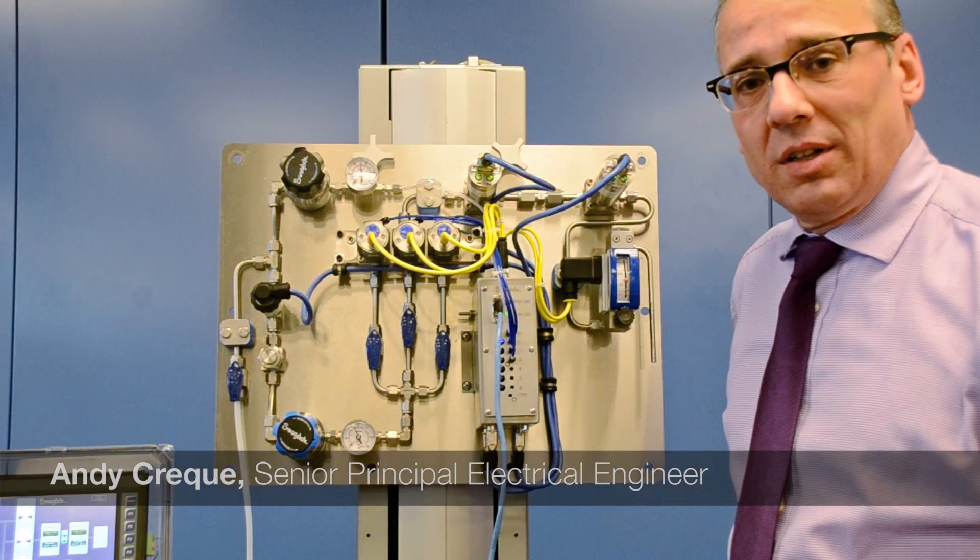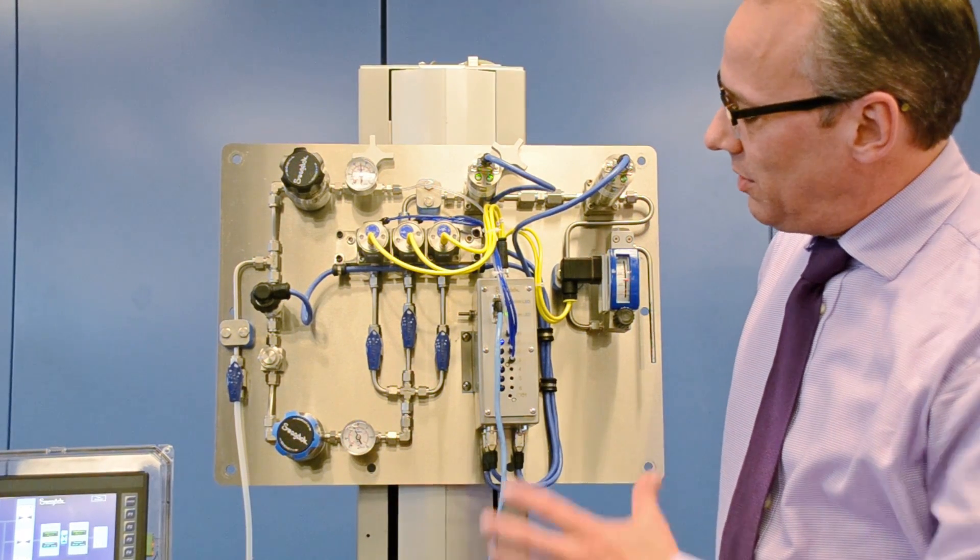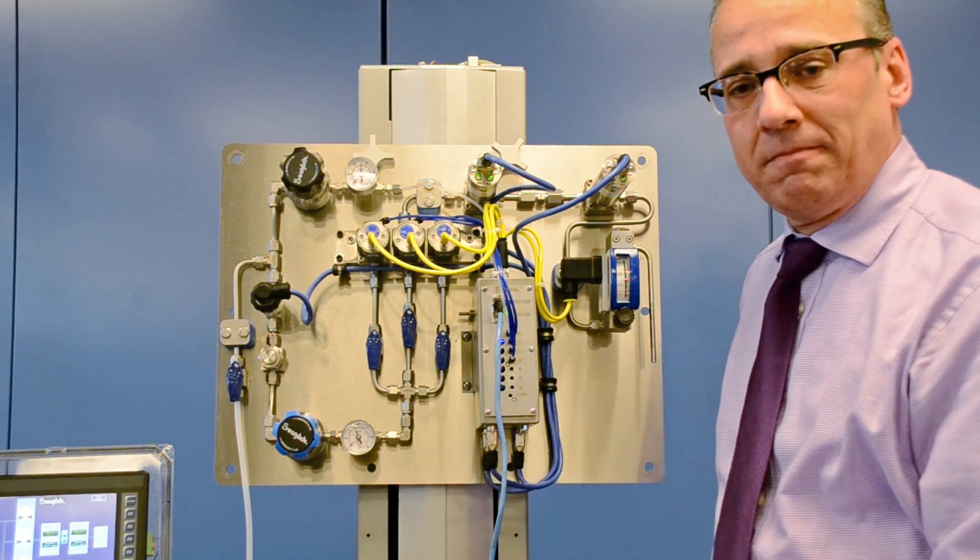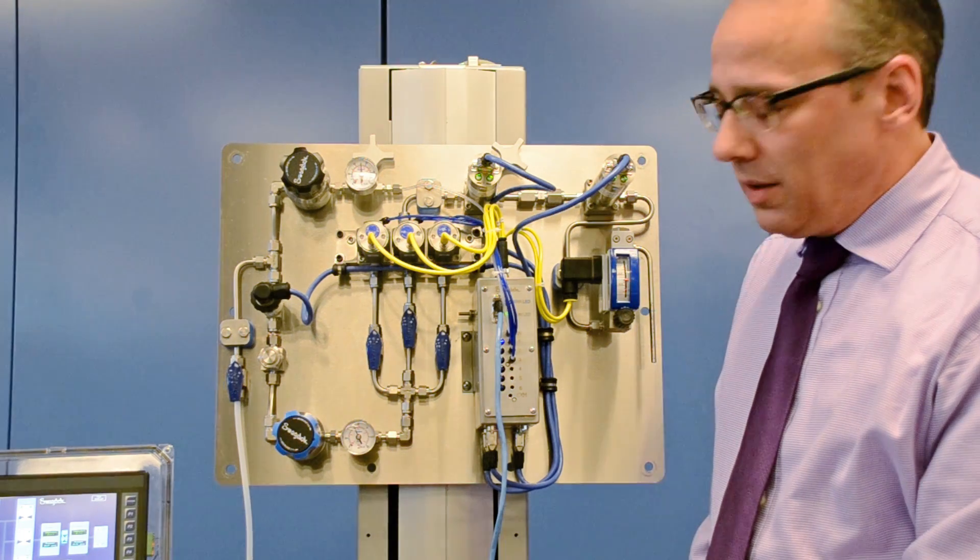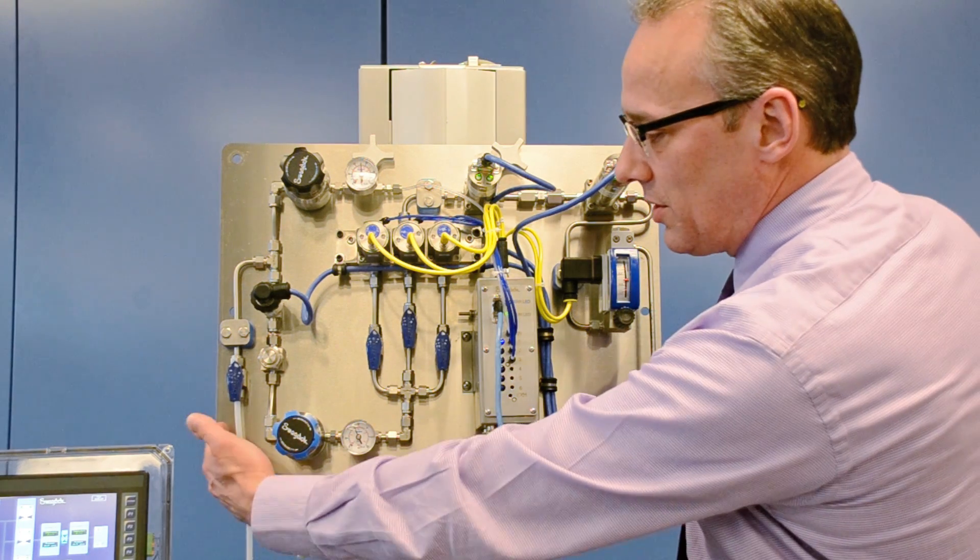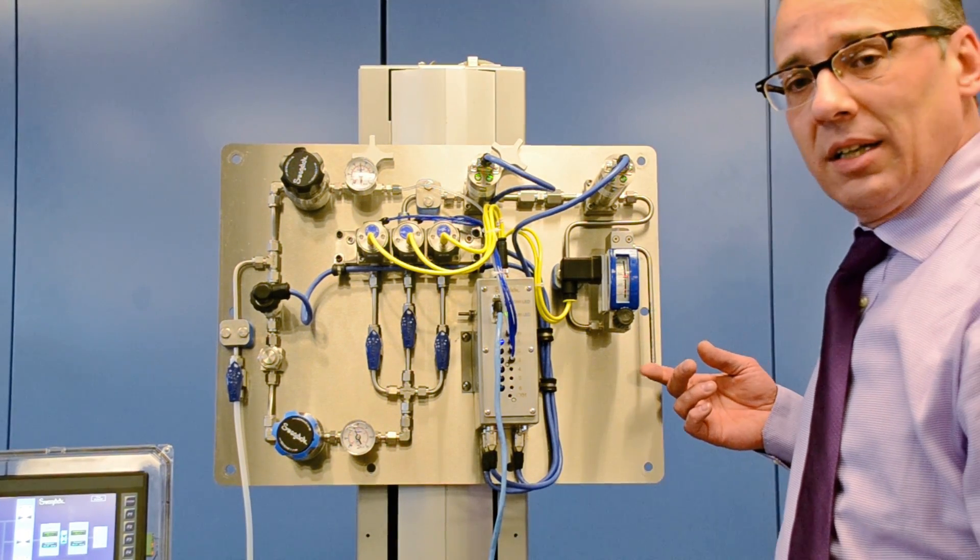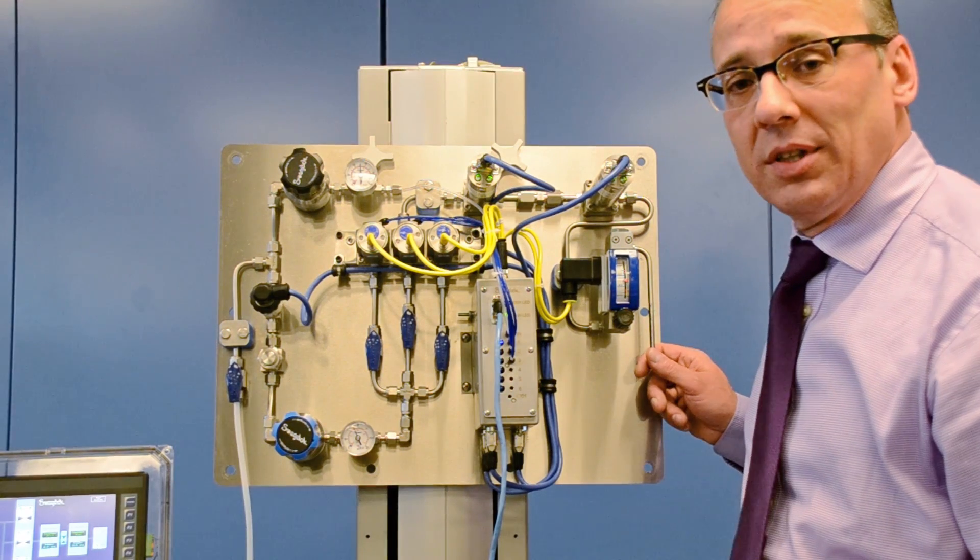Before I get started, I'd like to just give you an overview of this panel you see. This panel is representative of a traditional sample system that conditions a sample prior to analysis. On the left-hand side you can see a process stream coming in, and on the right-hand side here is where an analyzer would normally be connected to analyze the sample after it's been conditioned.